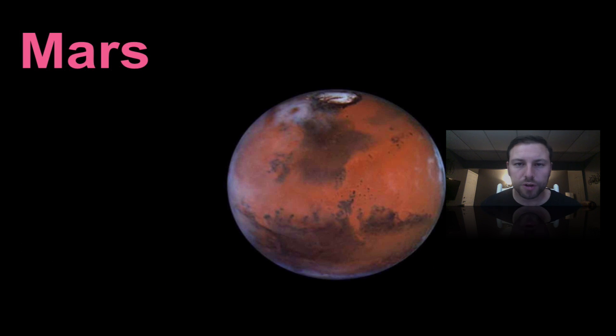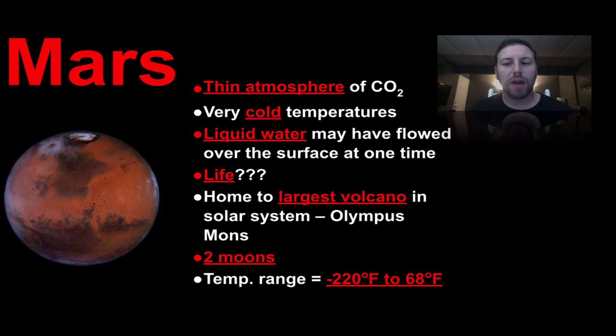And moving outward, we go to Mars. Very thin atmosphere of CO2, very cold temperatures here also. Liquid water, there's evidence that liquid water may have been flowing over the surface at one time, which means that there possibly could have been life. It's also home to the largest volcano, Olympus Mons. There's two moons, and also another pretty decent sized temperature range.